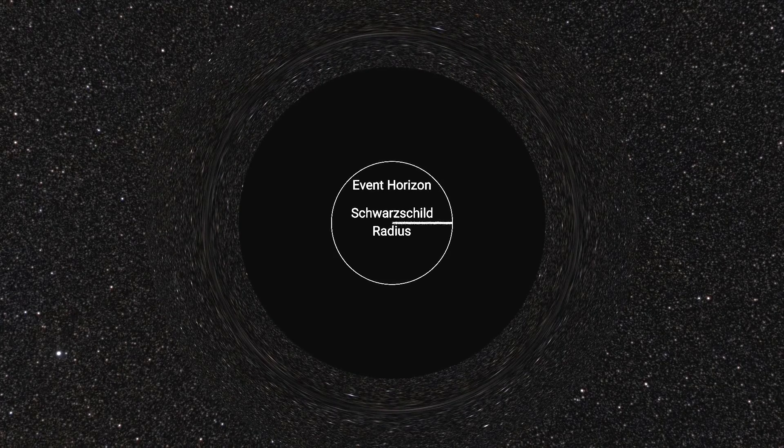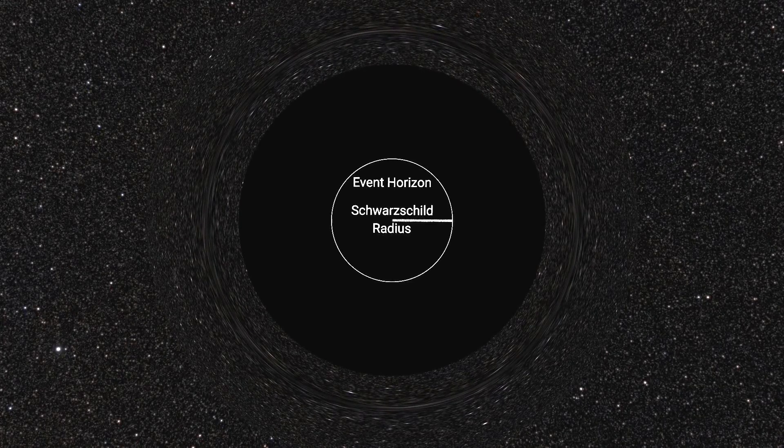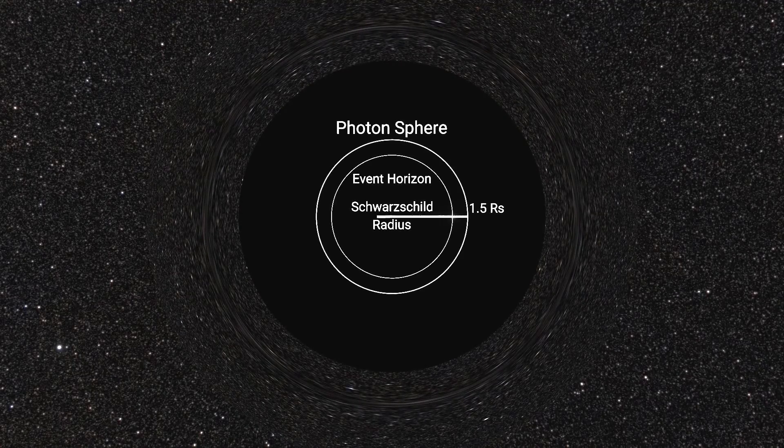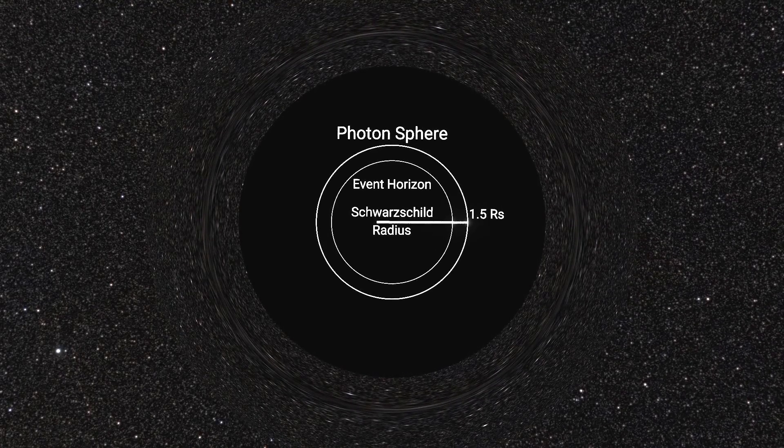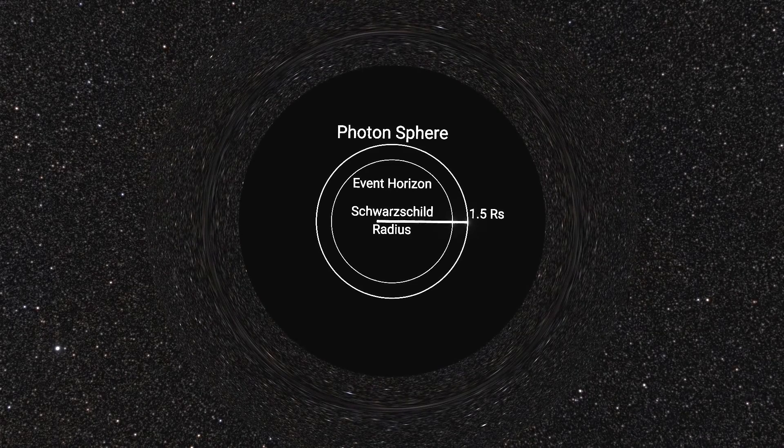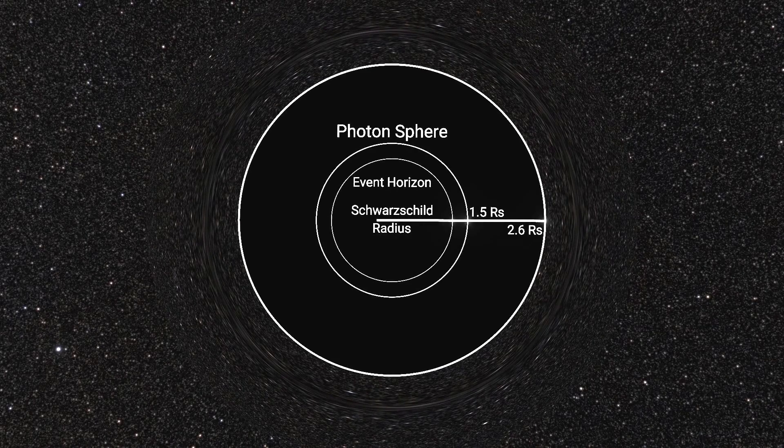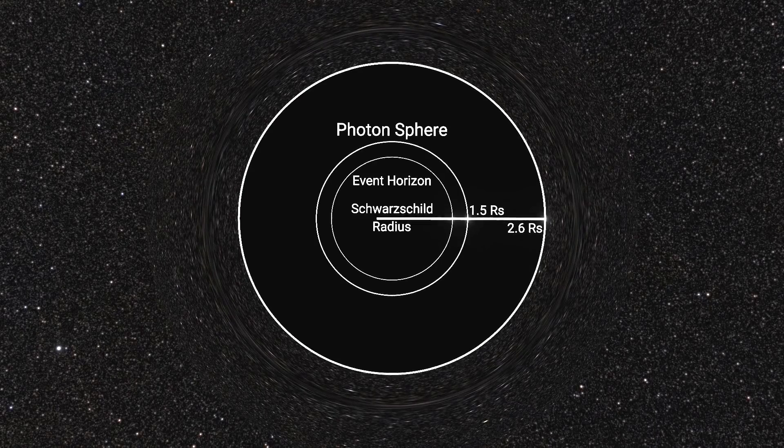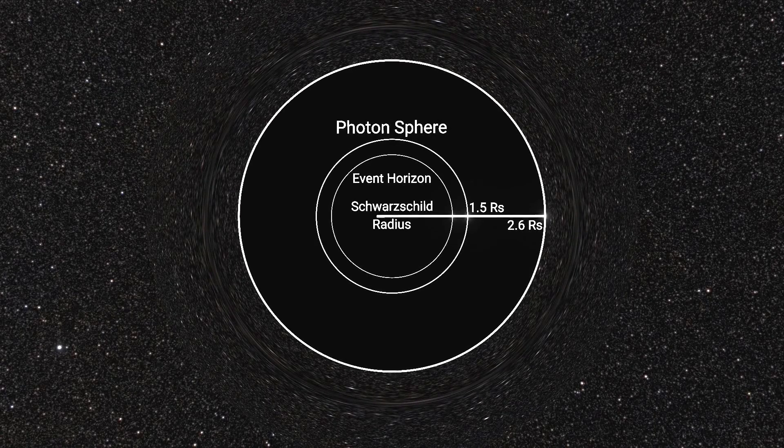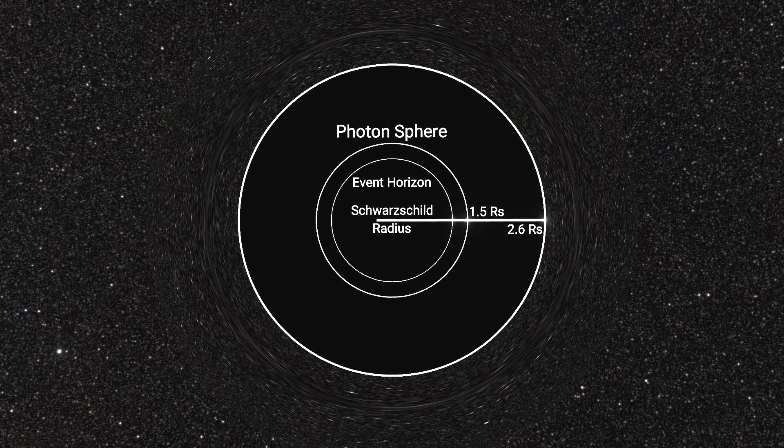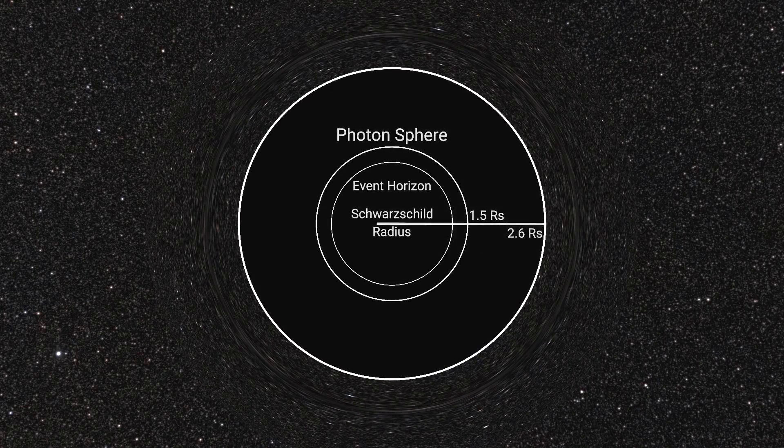1.5 Schwarzschild radii away from the center, we get the photon ring. This is the sphere where light is able to perfectly orbit the black hole. This is such a thin area that even light which may end up here will eventually escape, either falling into the black hole or moving into space, which would be visible to the naked eye as a faint ring at 2.6 times the Schwarzschild radii away from the center.